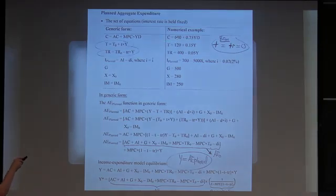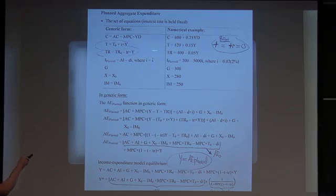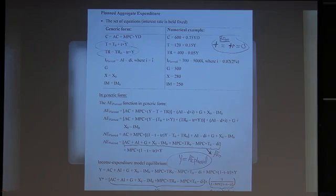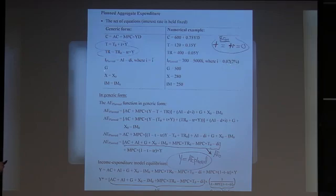In the numerical example: autonomous consumption is 600, MPC is 75%, autonomous taxes T0 are 120, tax rate little-t is 15%, autonomous transfers TR0 are 400, clawback rate little-tr is 5%. Planned investment: autonomous investment 700, interest rate sensitivity 5,000, nominal interest rate i is 0.02 (2%). G is fixed at 500, exports at 280, imports at 250.